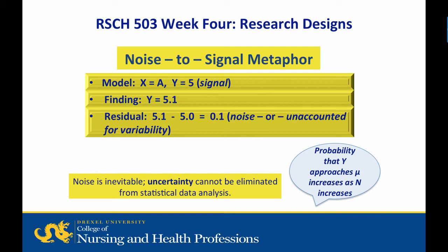An interesting metaphor to understand is the noise-to-signal metaphor. In this model, x equals a and y equals 5, with 5 serving as the signal. If your data reveals that y equals 5.1, then the residual — that is, 5.1 minus 5.0 — equals 0.1. The value 0.1 is the residual, or the noise. Noise is the unaccounted-for variability in the model. Noise is inevitable; uncertainty cannot be eliminated from statistical data analysis. However, the probability that y approaches mu increases as the sample size, or capital letter N, increases.